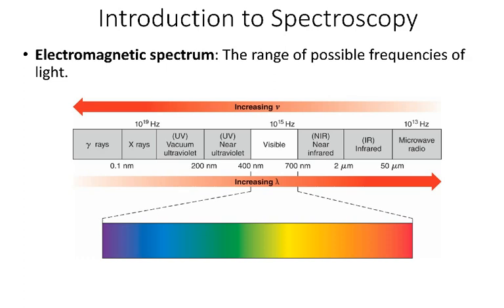This is just a quick review of the electromagnetic spectrum. There are many different types of electromagnetic radiation, and they differ in their frequencies and their wavelengths. Down here on the long wavelength, low energy, and low frequency region, we have microwaves and radio waves. We then have infrared and visible. Ultraviolet is higher in energy and higher in frequency than visible light. And then the highest energy, highest frequency electromagnetic radiation with the shortest wavelengths are gamma rays and X-rays.